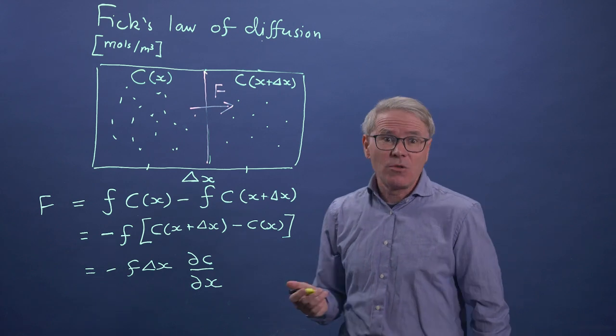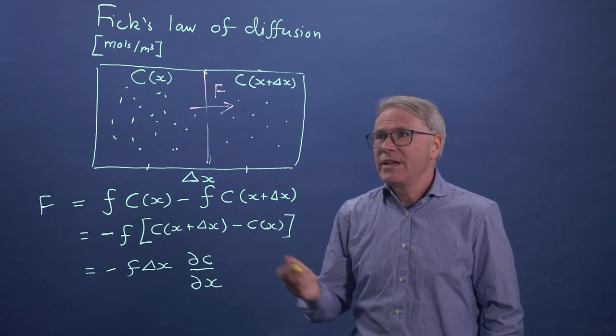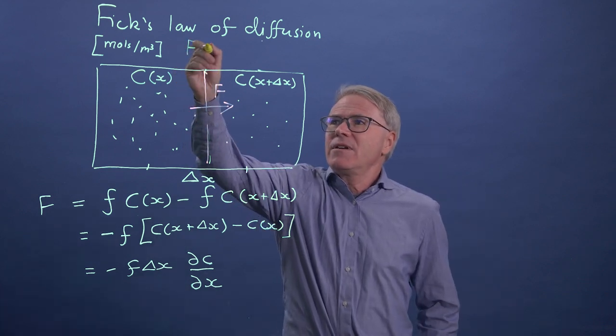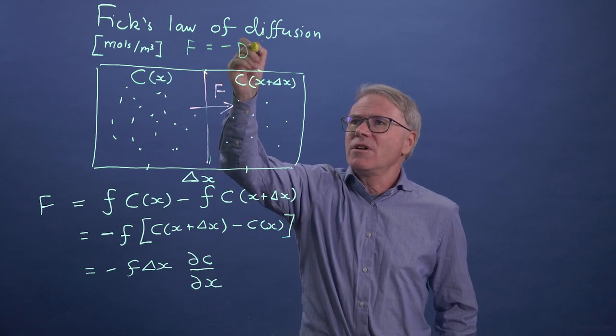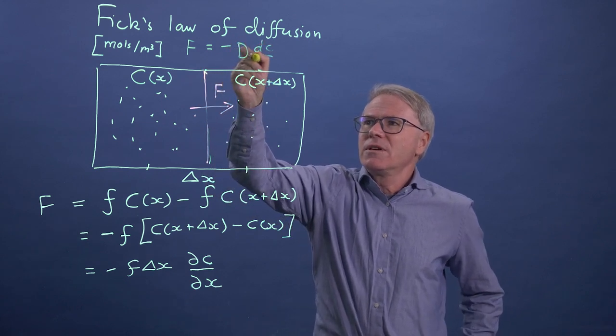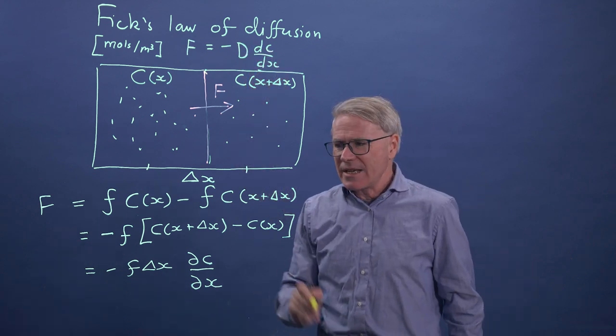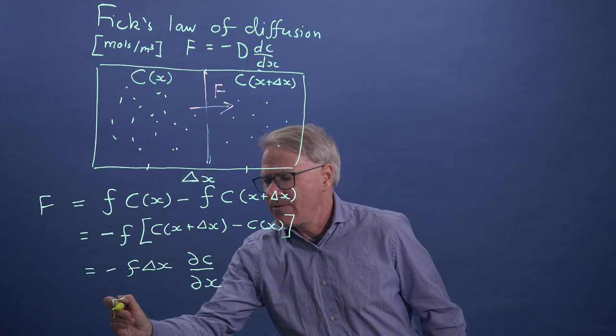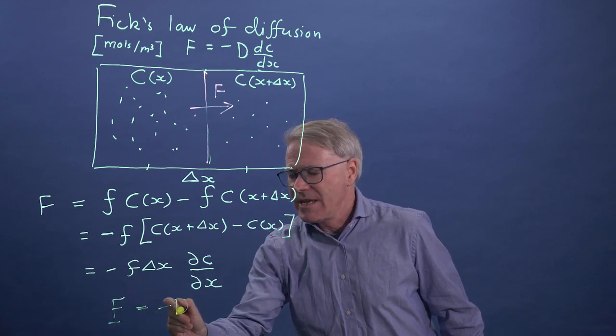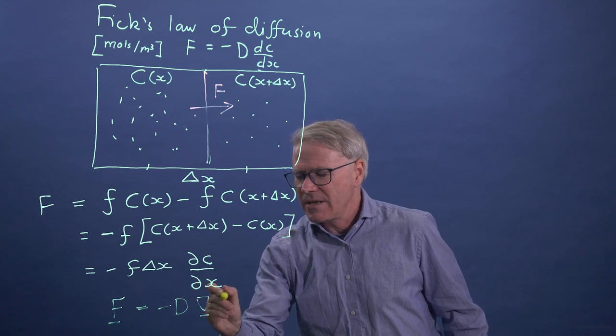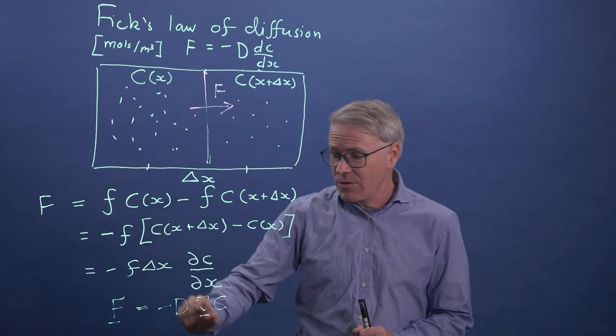So some fraction moves this way, some fraction moves this way. There is a net flux from left to right simply because there's more material here. And don't worry about the F delta X, the flux itself is then proportional to a concentration gradient. So Fick's law of diffusion says that the flux of particles can be written as minus a diffusion coefficient times a concentration gradient. And in 3D, we can write this in vector form, F is a vector, and it's minus D times the gradient in concentration. And that's traditionally how Fick's law of diffusion is written.